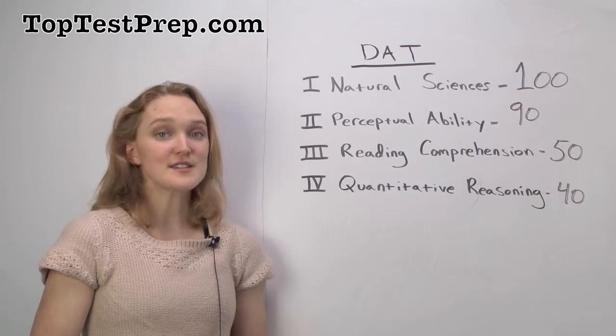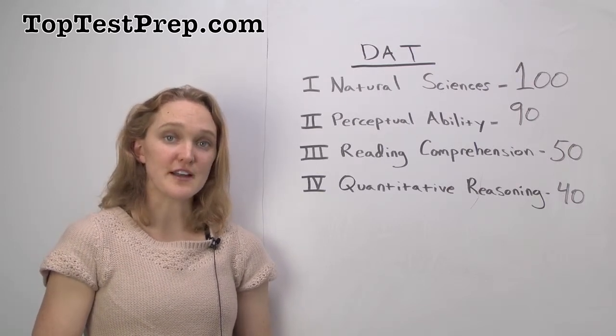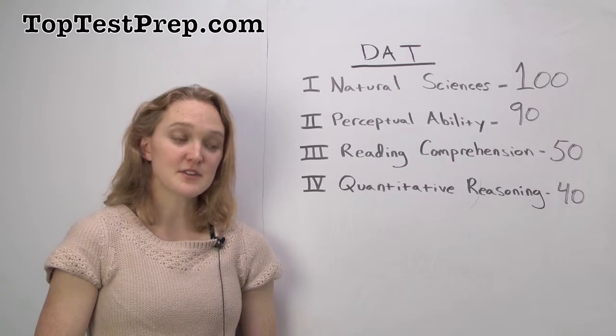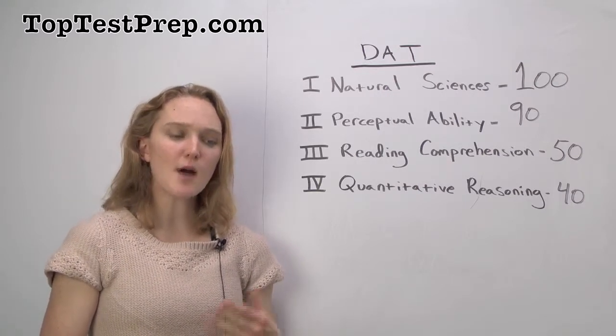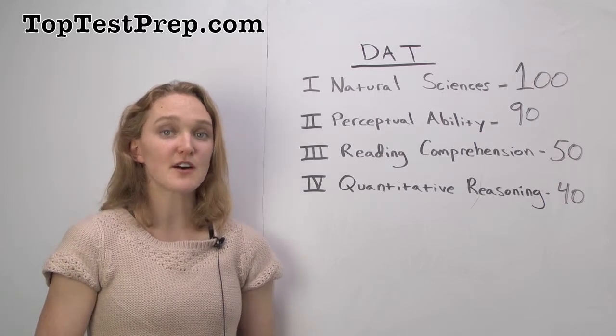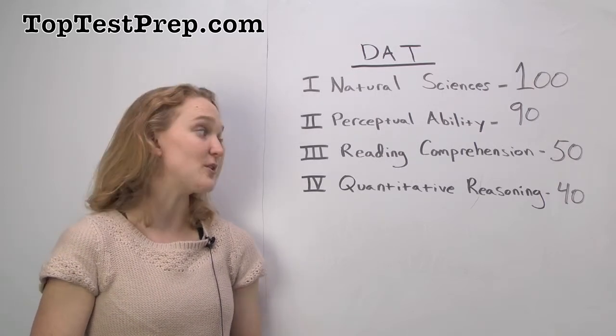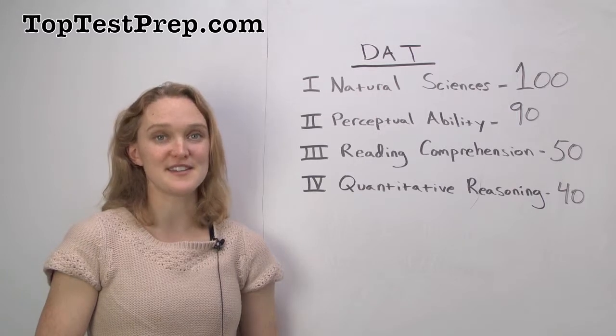Finally, you have quantitative reasoning. There are two types of questions that you'll find on this section of the test. There's the mathematics problems, for which there are 30 questions, and then there are more applied mathematics word problems, for which there are 10 questions, giving you a grand total of 40 quantitative reasoning questions.